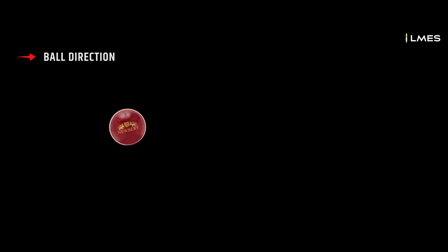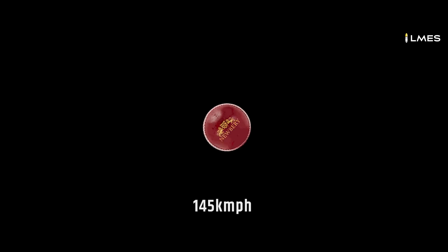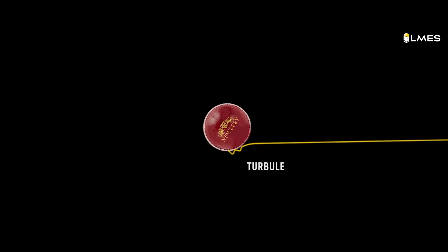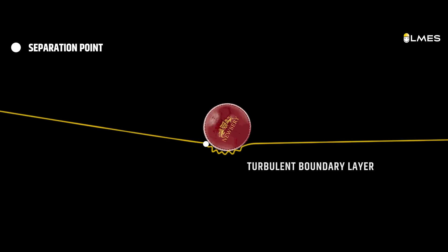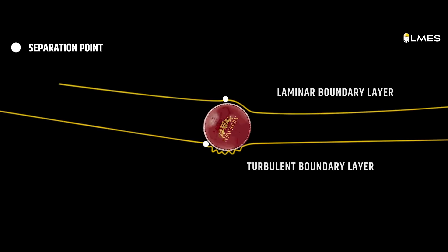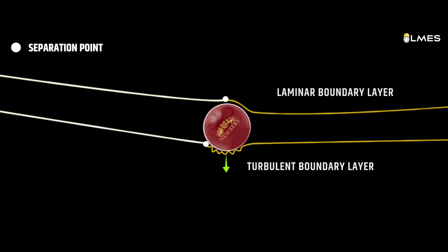At around 145 km per hour with 1000 rpm, the air molecules move fast. Therefore, the boundary layer becomes turbulent on one side and laminar on the other. If you compare the air molecules, you can see the pressure difference — there is greater pressure on the bottom. The force acts upward on the ball. Under certain bowling conditions, this acts in reverse — that is why we call it the reverse magnus effect.